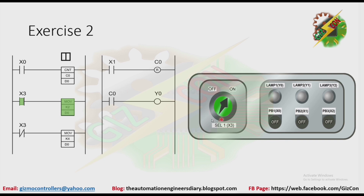Now that the selector switch is on, it will make the value of D0 equivalent to 2. As you can see here, because the preset value of the counter is equivalent to D0, that will make the counter preset value equivalent to 2. Now let's press PB1: one, two.